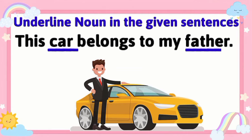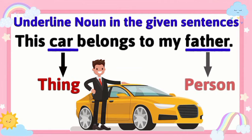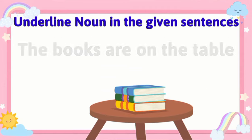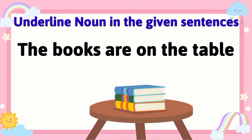'This car belongs to my father.' In this sentence, the words car and father are both nouns. Car is the name of a thing and father is the name of a person. So car and father are both nouns.